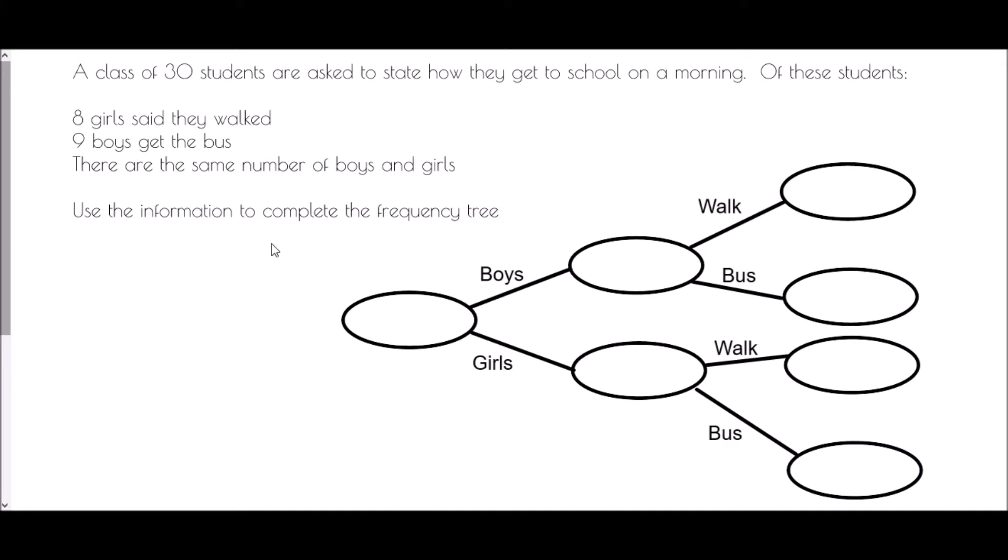And so the first thing that we need to do with the Frequency Tree—frequency means the number of times it happens. Therefore, the very first part is we were told there were 30 students. And so the first value in our Frequency Tree is always the total number of people that we've started with. Now, what we're then going to do, it splits off, which means we're going to break down the 30 students into the number of boys and the number of girls. I'm going to go one step at a time.